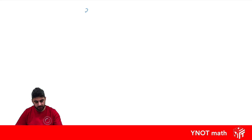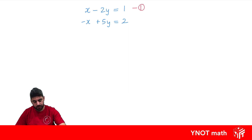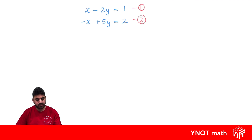Let's have a look at these two equations: x minus 2y equals 1, and minus x plus 5y equals 2. Here we don't have any pronumerals that are the subject, so it's probably best to use the elimination method. Let's label our equations — this one being 1 and this one being 2. With the elimination method we need to look for pronumerals with the same coefficient. It doesn't matter about their sign, just the value of the coefficient. Here, both x's have a coefficient of 1 — this one has a positive 1 and this one minus 1.